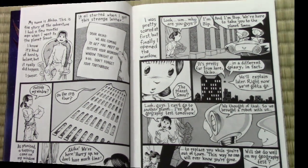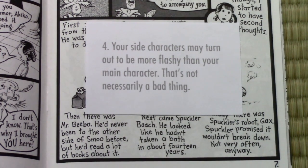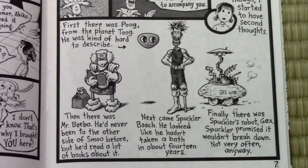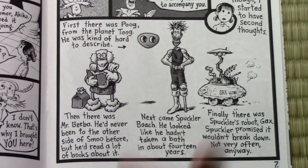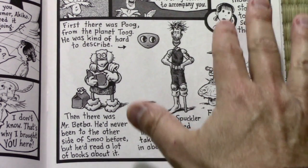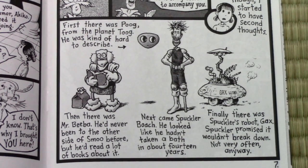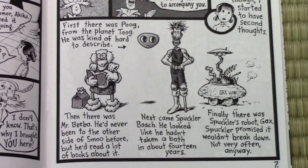Number four: your side characters may turn out to be more flashy than your main character — and that's not necessarily a bad thing. Here you see the four side characters I created for the Akiko series: Mr. Biba, Poog, Spuckler, and his robot Gax. Just looking at them visually, they're more interesting and more unusual in design than Akiko. I think it's common for the main character as the audience surrogate to be a little neutral — like Charlie in Charlie and the Chocolate Factory, where everyone else is more extreme in personality. If you try to make Willy Wonka the main character, it becomes challenging for the audience to identify with such a flashy, unusual guy. So don't worry if your side characters are becoming more interesting than the main character — it's very natural and you can use it to your advantage.